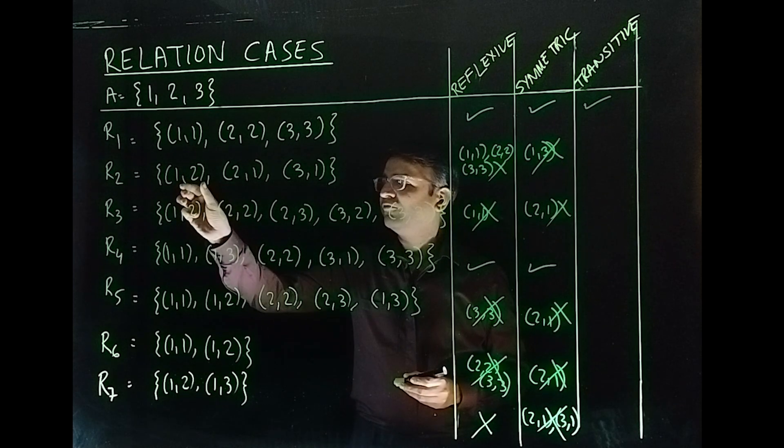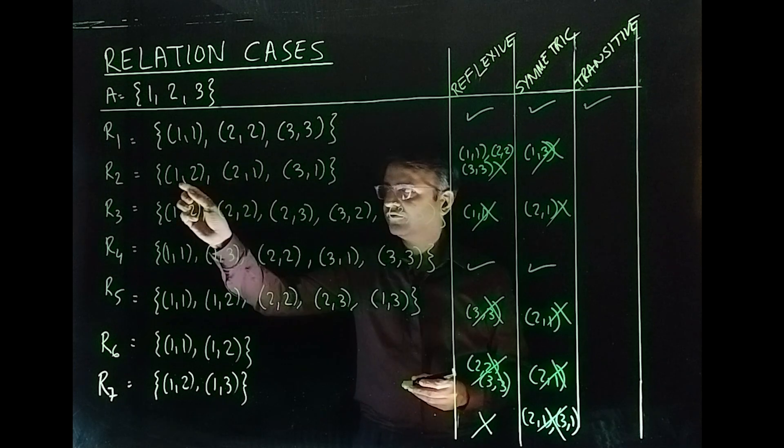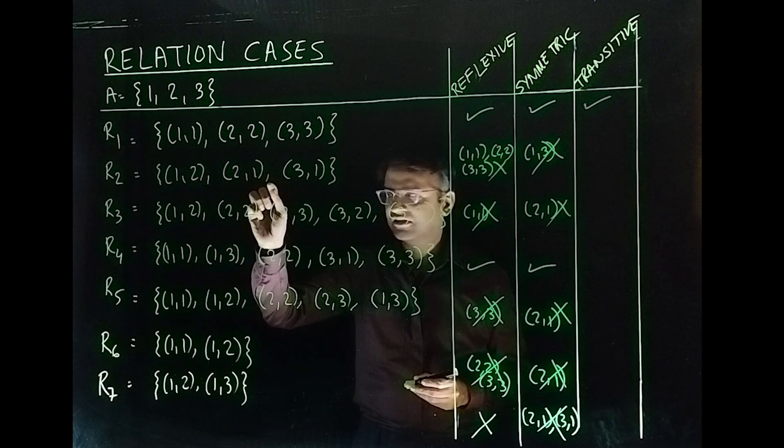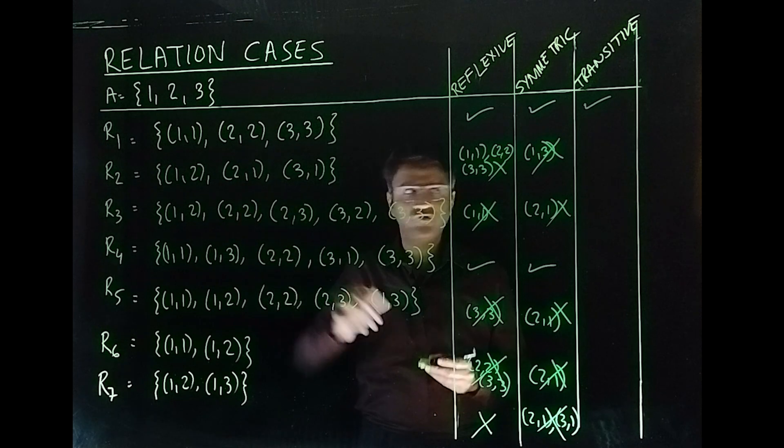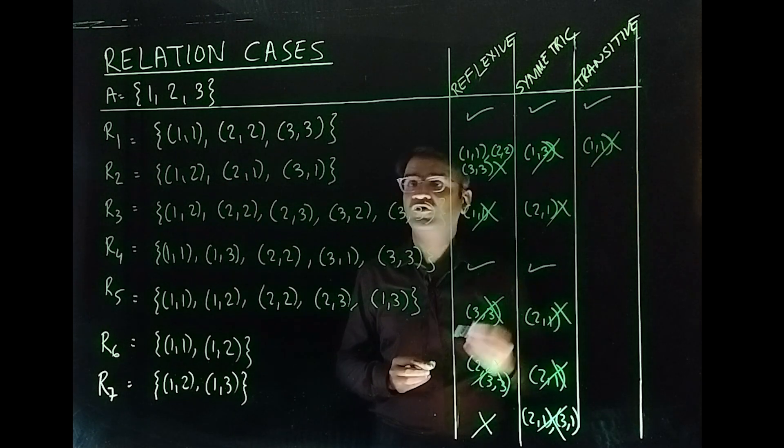Now, you have (1,2), (2,1), (1,1), fine. (1,2), (2,3). What about (1,3)? Is it there? No, it's not there. So, (1,3) is missing. So, it is not transitive.